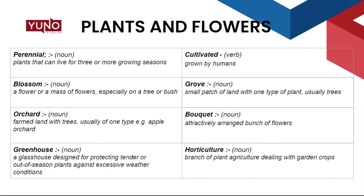5. Cultivated — verb, grown by humans. 6. Grove — noun, a small patch of land with one type of plant, usually trees. 7. Bouquet — noun, an attractively arranged bunch of flowers, which is usually used as a present. 8. Horticulture — noun, the branch of plant agriculture dealing with garden crops.